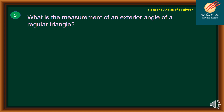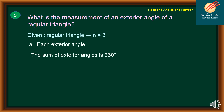Question number 5: what is the measurement of an exterior angle of a regular triangle? A regular triangle has N equal to 3. Using the formula, each exterior angle equals 360 divided by N. So 360 divided by 3 equals 120 degrees.